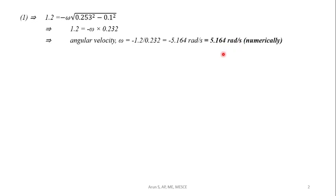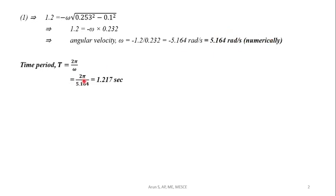The time period of oscillation is given by T = 2π/ω. Substituting the numerical value of omega: T = 2π / 5.164, giving a time period of 1.2117 seconds.